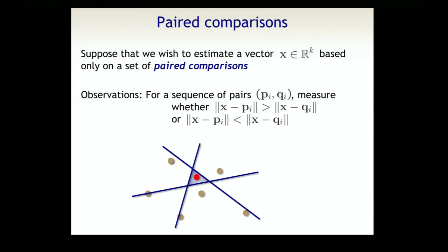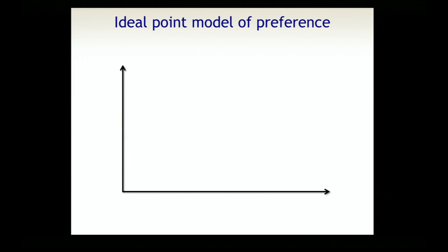The question I'm interested in is how many comparisons we need to get certain accuracy guarantees—basically, how accurately can we estimate this point just from comparisons of this sort. There are lots of places where this comes up. I'm going to focus on recommendation systems as a concrete example where this makes a lot of sense.